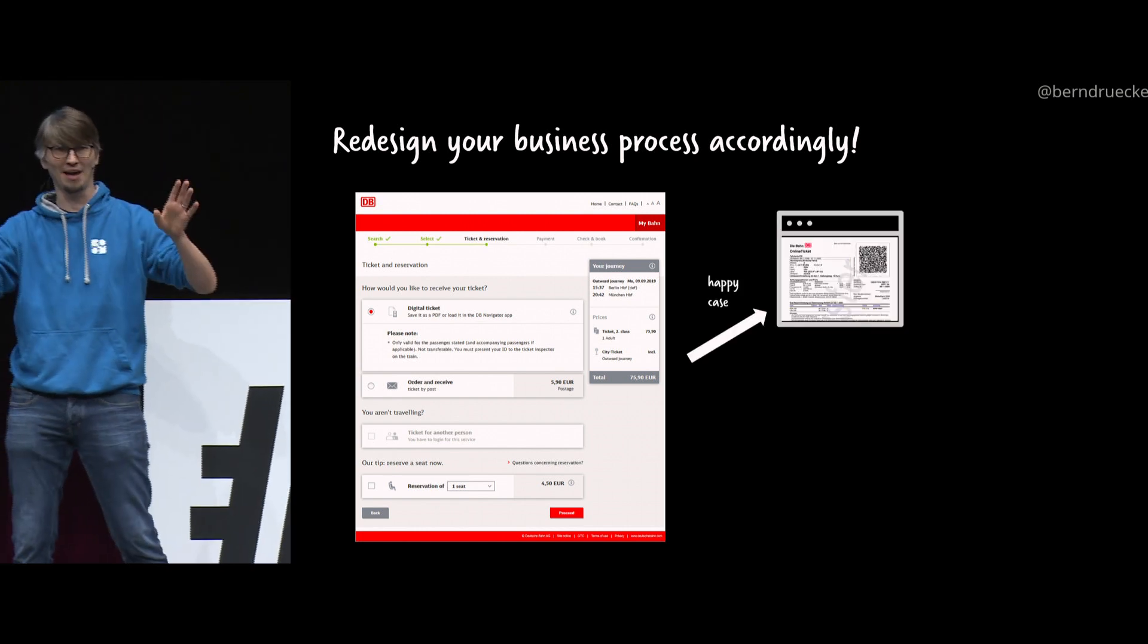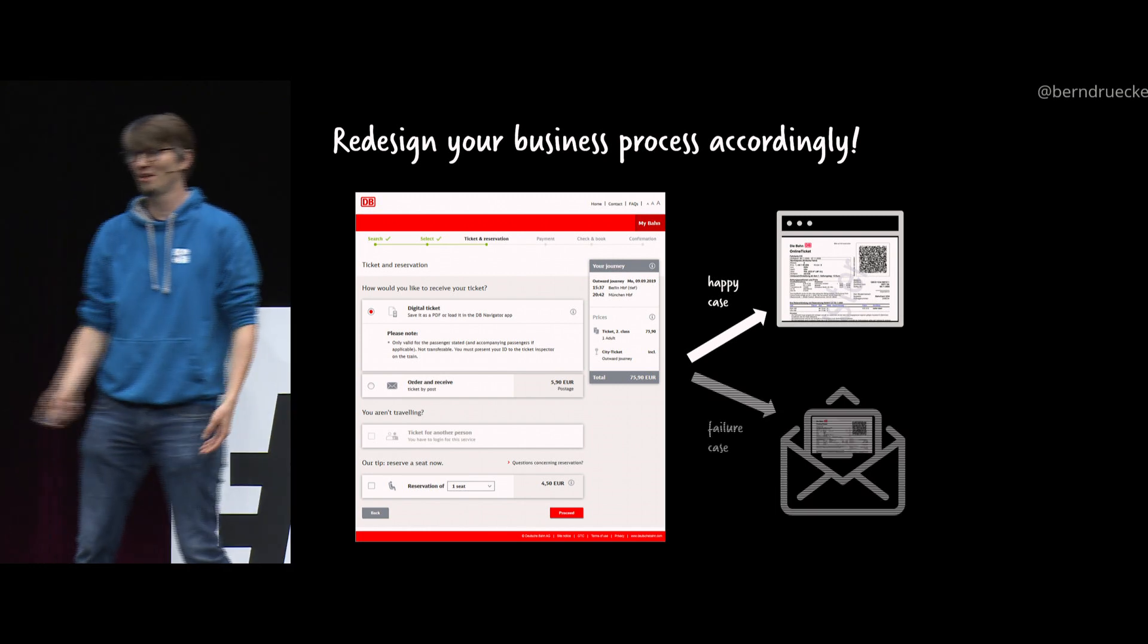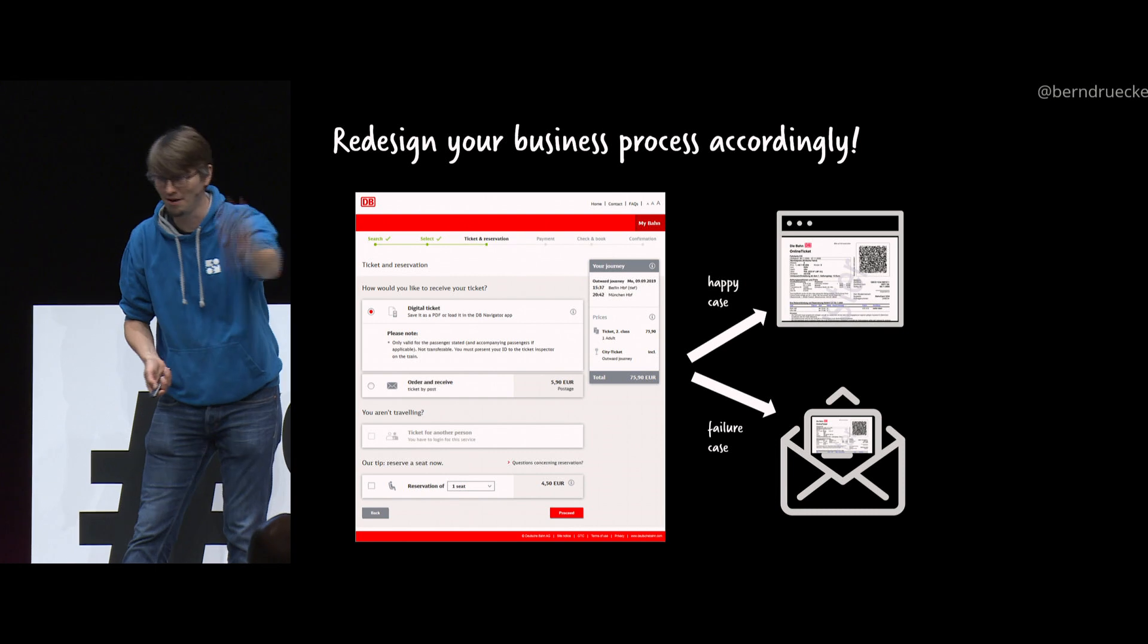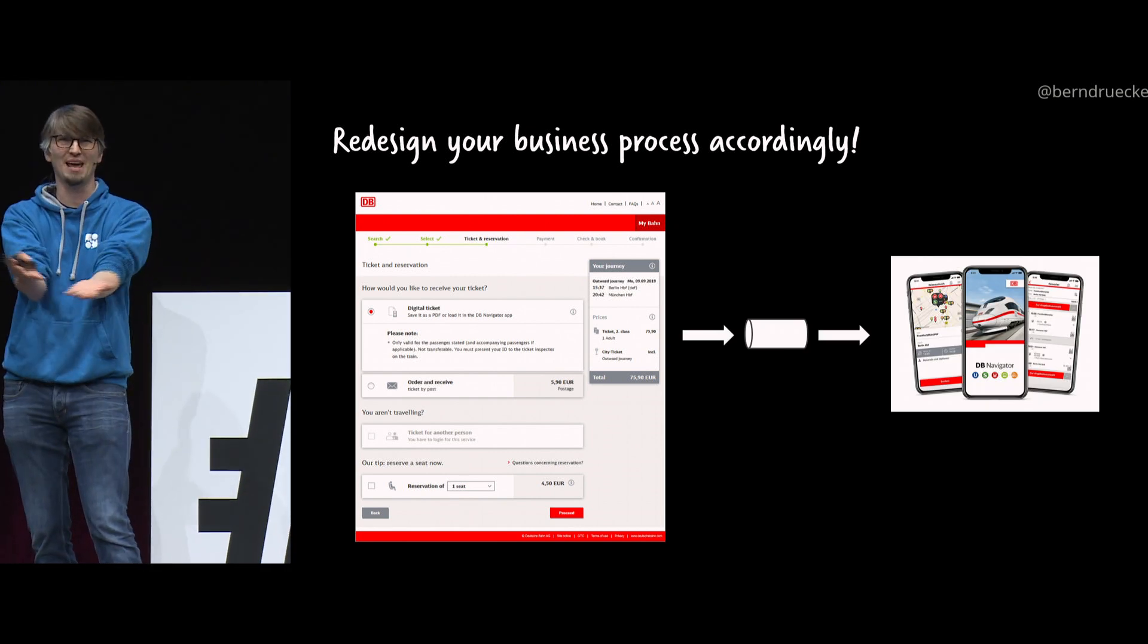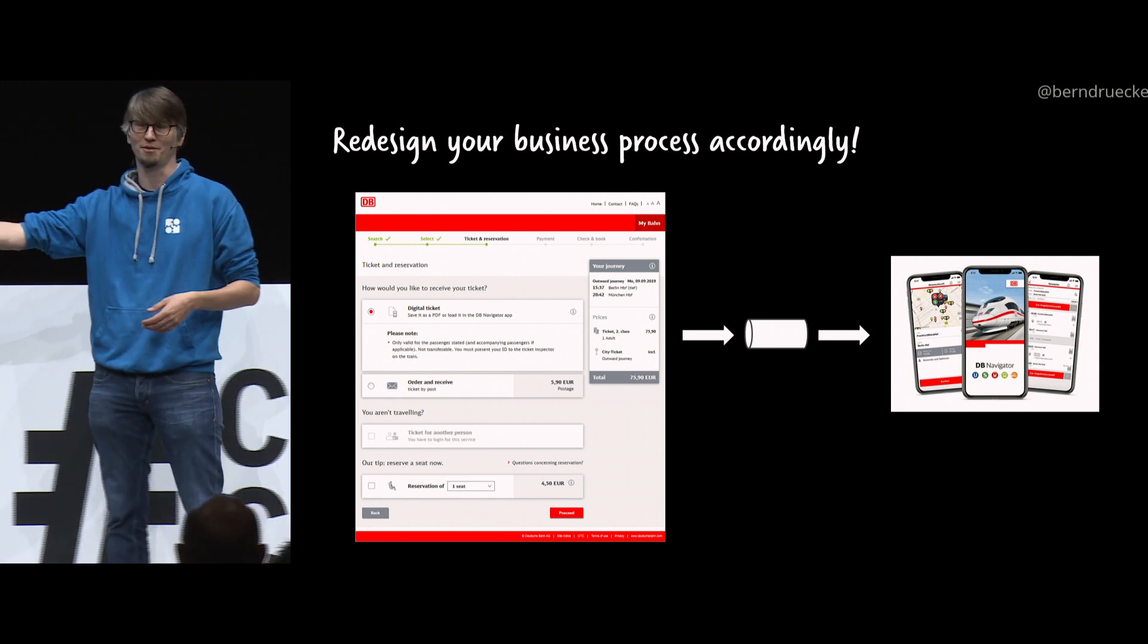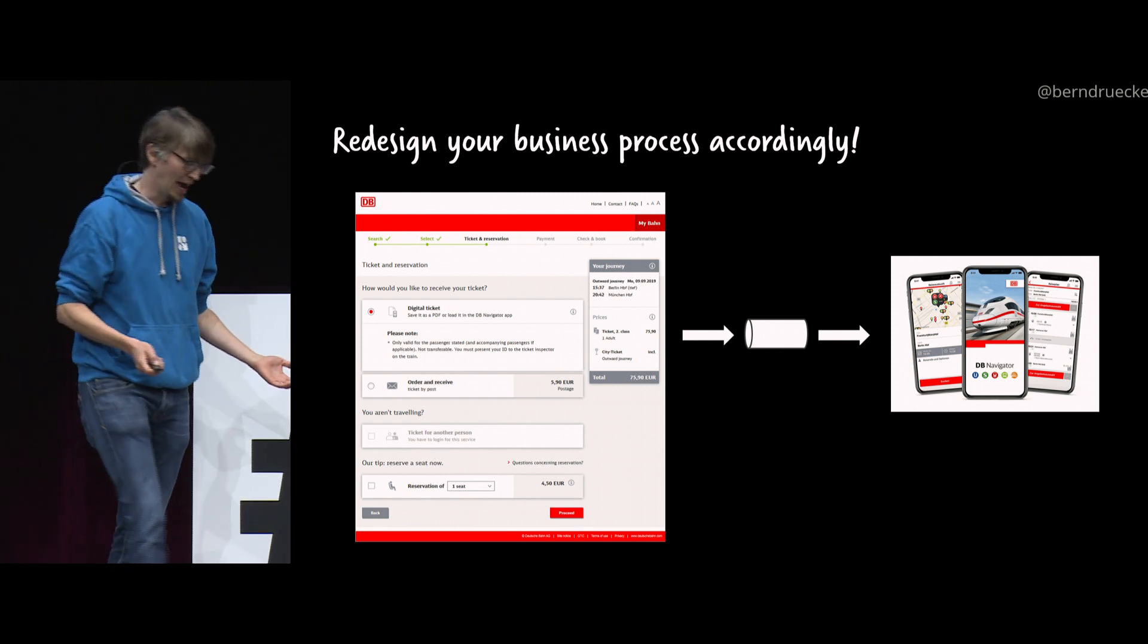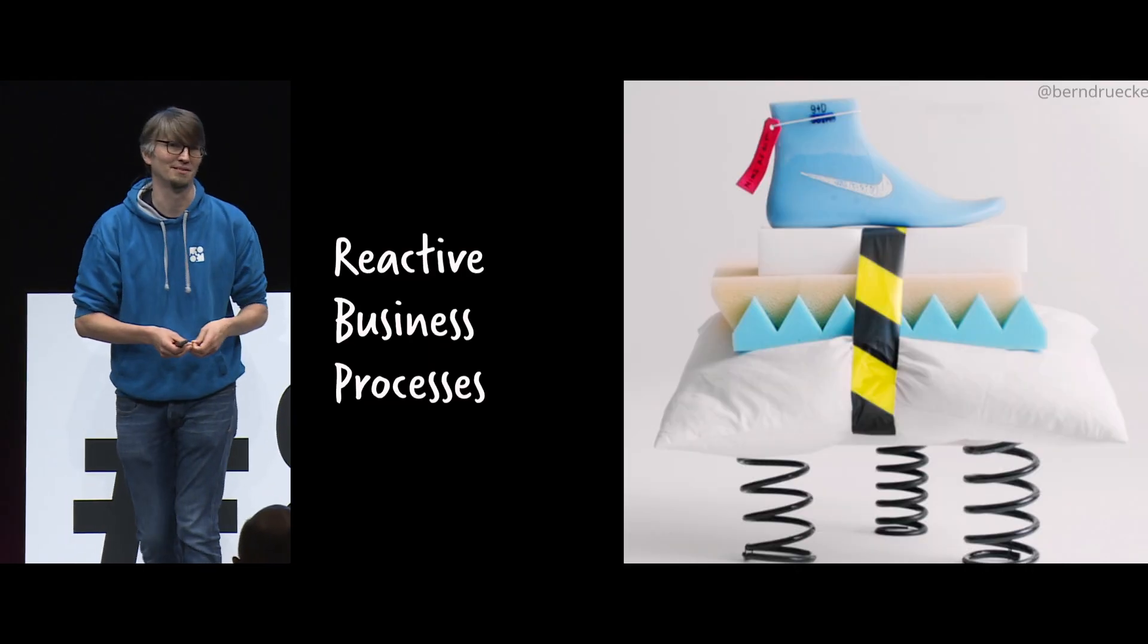So at least you should do something like, hey, if everything is fine, in the rare case that you don't have errors in your system, you produced a ticket. But if not, you send an email with the ticket. Where's the problem? You send it later on. In the better case, you should probably completely redesign it. I mean, who wants the ticket? It's a paper, PDF thingy. I want to have it in the app. And I just need it when I enter the train, not before. So you have plenty of time. You can do that completely different. And that opens up so many possibilities. And I started to refer to that in discussions as what I call reactive business processes.